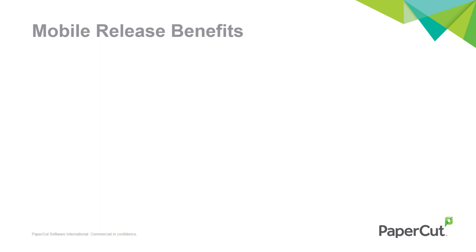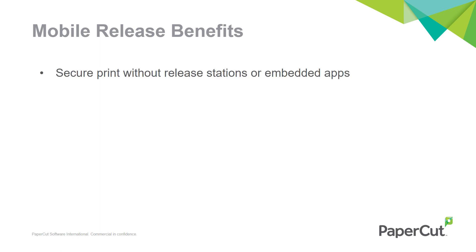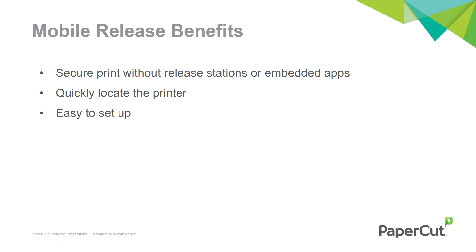First of all, why would you want to use mobile print release? Well, it allows you to have secure print without needing to set up an embedded device or release station. You can quickly locate which printer you're at with the ID number lookup or QR code, and it's really easy to set up.